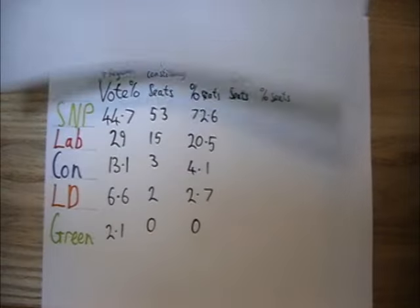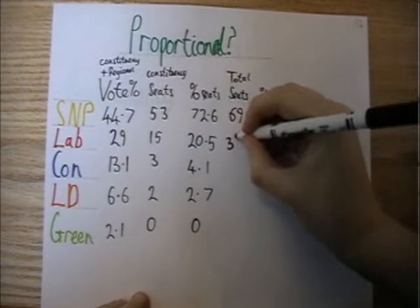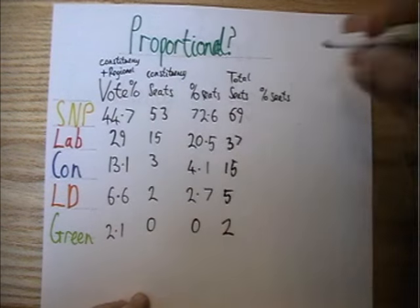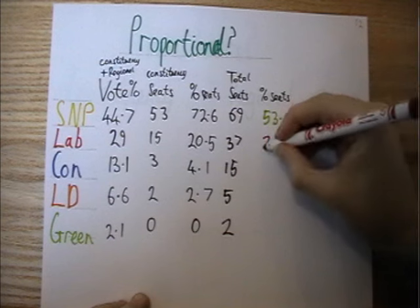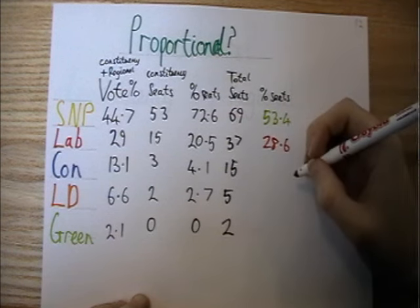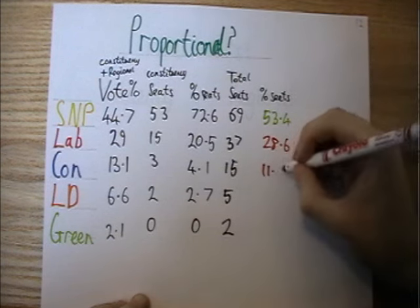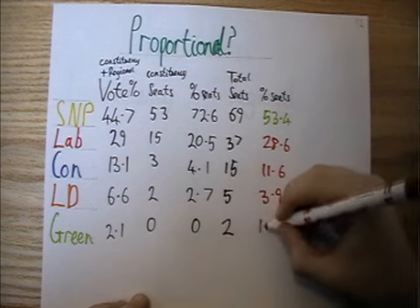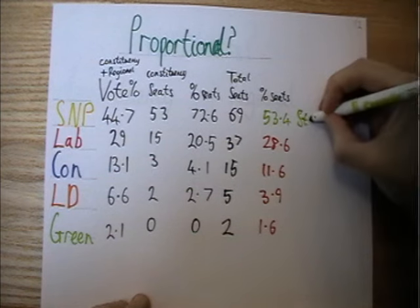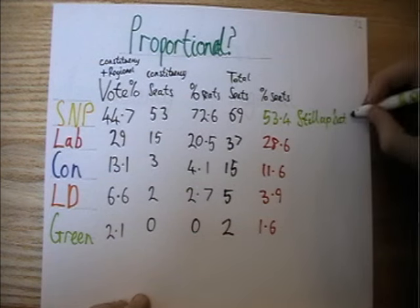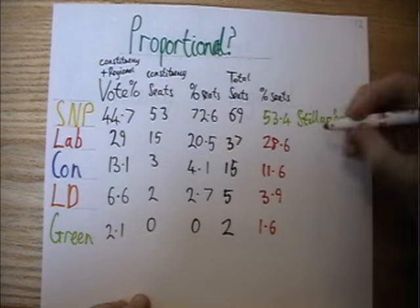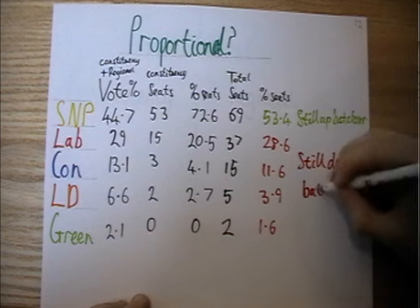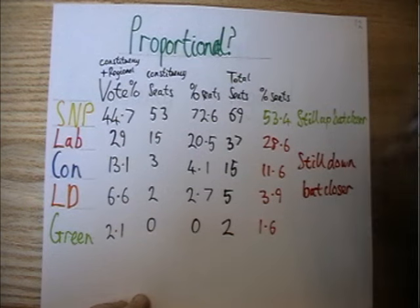So what's the theory behind using this voting system instead of either just first past the post or the party list on their own? The idea is to keep the local representative given by first past the post, and use the regional list to make the parliament more representative of the overall vote. Looking at 2011, we can see that proportionality works to an extent when you consider the percentage of constituency seats to total seats won. The SNP get brought down from a massive majority to only a small one, whilst all other parties get closer to the vote share that they won. There is still a noticeable gap, as the SNP still won a majority with distinctly less than half of the votes.